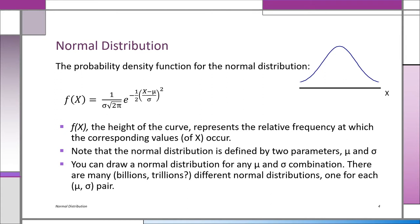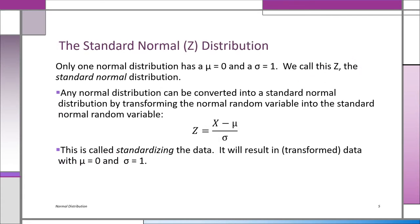How are we going to use one table to compute probabilities from any normal distribution? There are infinite normal distributions — you can create your own by specifying mu and sigma. But there is one special one called Z, the standard normal distribution. The standard normal distribution has a mu of 0 and a sigma of 1, and that's why we have a Z table — it's essentially our template, showing what the normal distribution looks like when mu is 0 and sigma is 1.